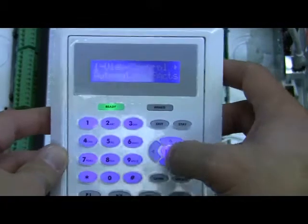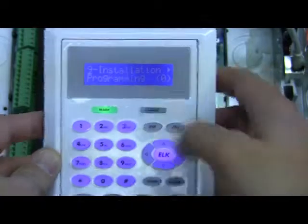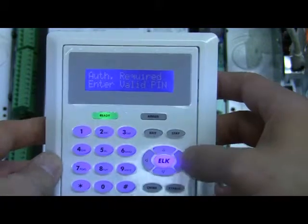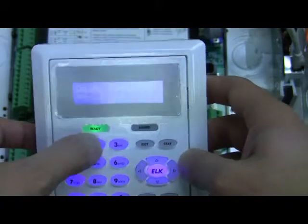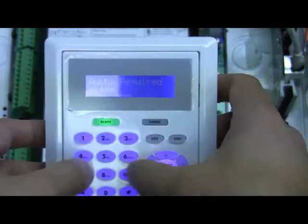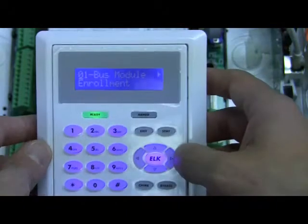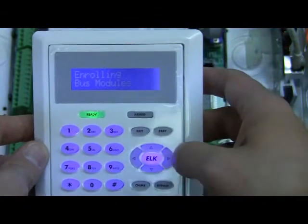I'm going to press the ELK button, number nine, installation programming, right arrow to get in. Put in the default installer code, which is 172839. I need to do a bus module enrollment, so right arrow to get in.